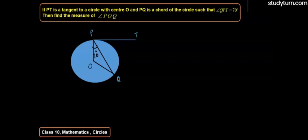So first we have a circle in which PQ is a chord, the center point given is O, angle QPT is given as 70 degrees, then we have to measure the angle POQ.